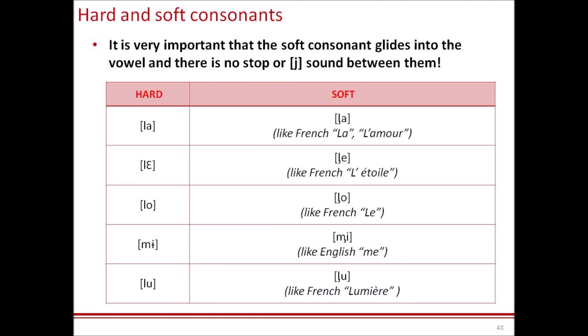In a way, it is similar to French diction. So we have hard ЛА and soft ЛА, like French 'la' in ЛАМУР. We have hard ЛЕ and soft ЛЕ, like French ЛЕТОВАЛЬ. We have hard ЛО and soft ЛЮ, like French ЛЮ. We have hard МЫ and soft МИ, like English 'me.' We have hard ЛУ and soft ЛЮ, like French ЛЮМЬЕР.